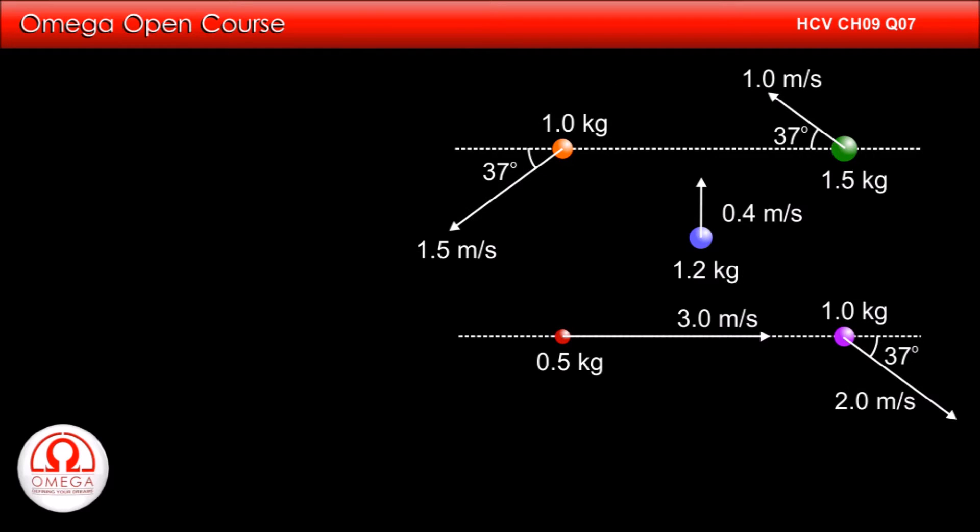Let us denote the velocity of the 1 kg particle on the top left by vector v1, the 1.2 kg particle by vector v2, the 1.5 kg particle by vector v3, the 0.5 kg particle by vector v4, and the 1 kg particle in the bottom right corner by vector v5.